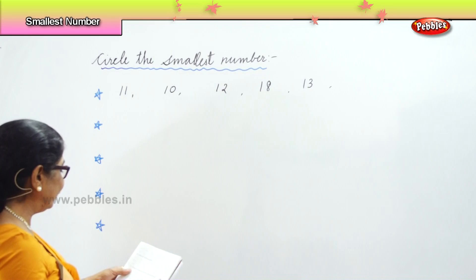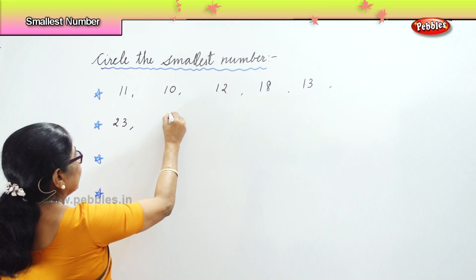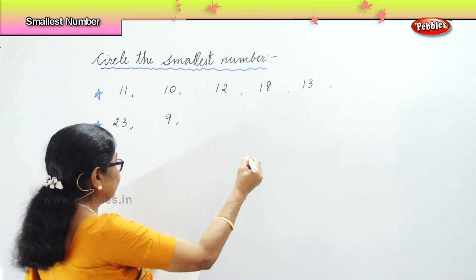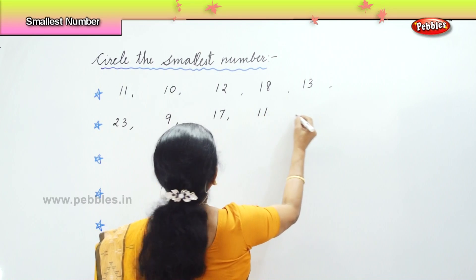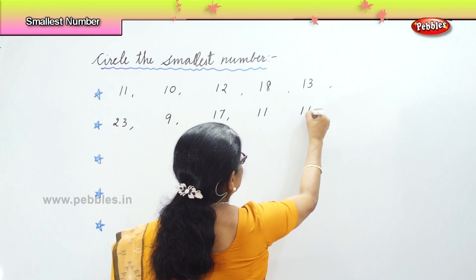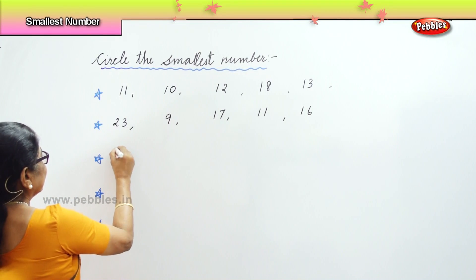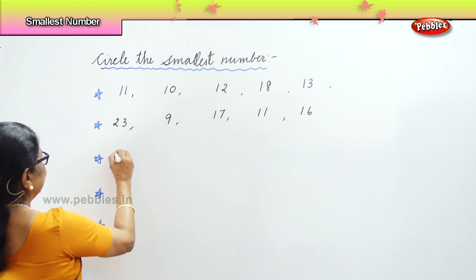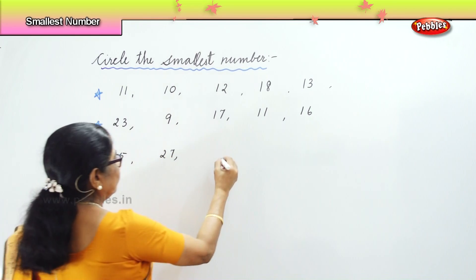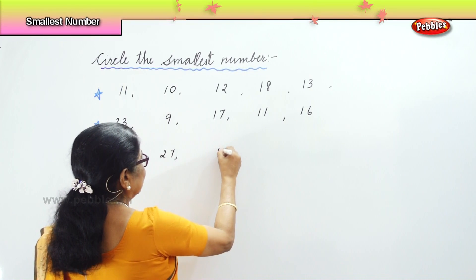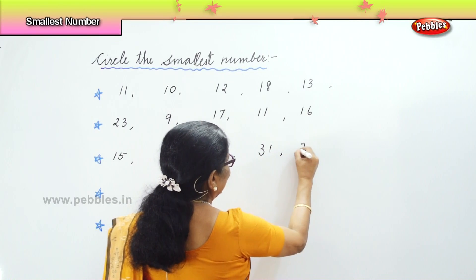Another set of numbers I have here for you is twenty-three, nine, seventeen, twenty-three, eleven and sixteen. Another lot I have here for you is fifteen, twenty-seven, ten, thirty-one, twenty-one, twenty-two.